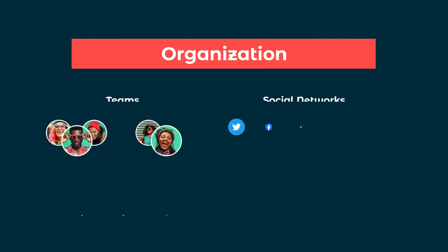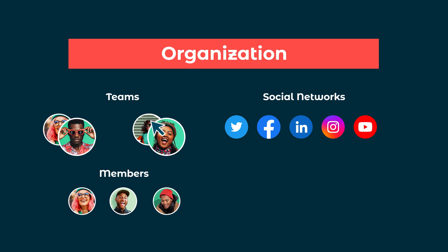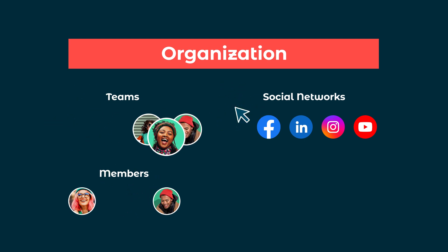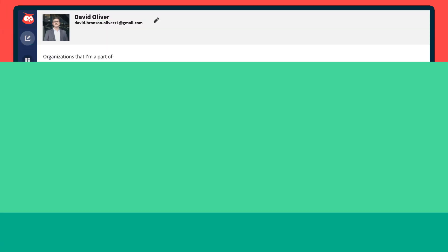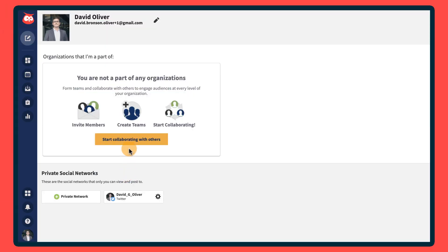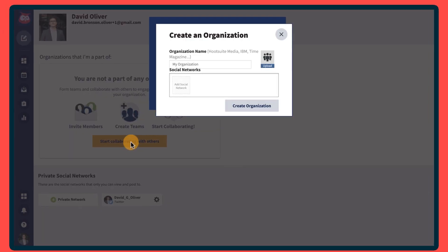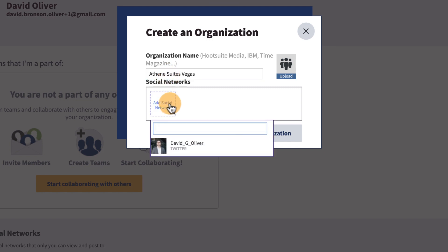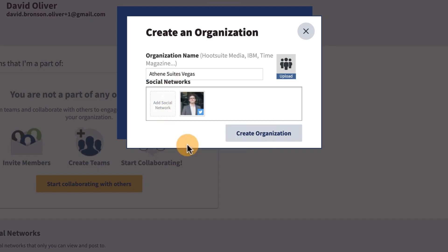Hootsuite organizations are dynamic, which means you can always change the structure, add or remove users, teams, and social networks. If you're just getting started with Hootsuite, create an organization here. Give it a name, add a social network, and create.